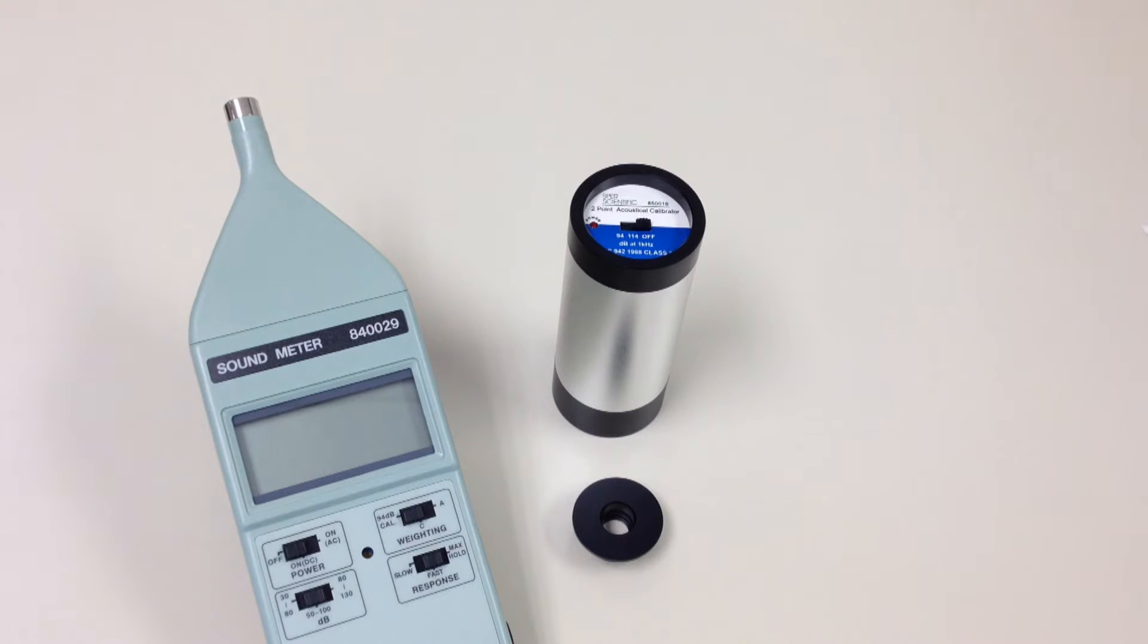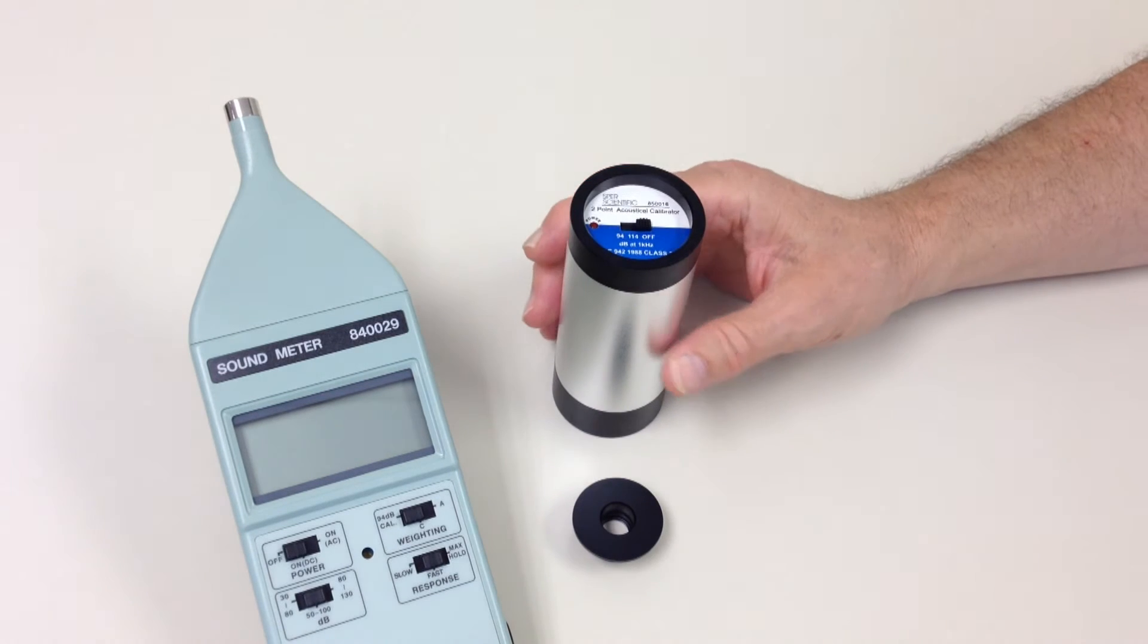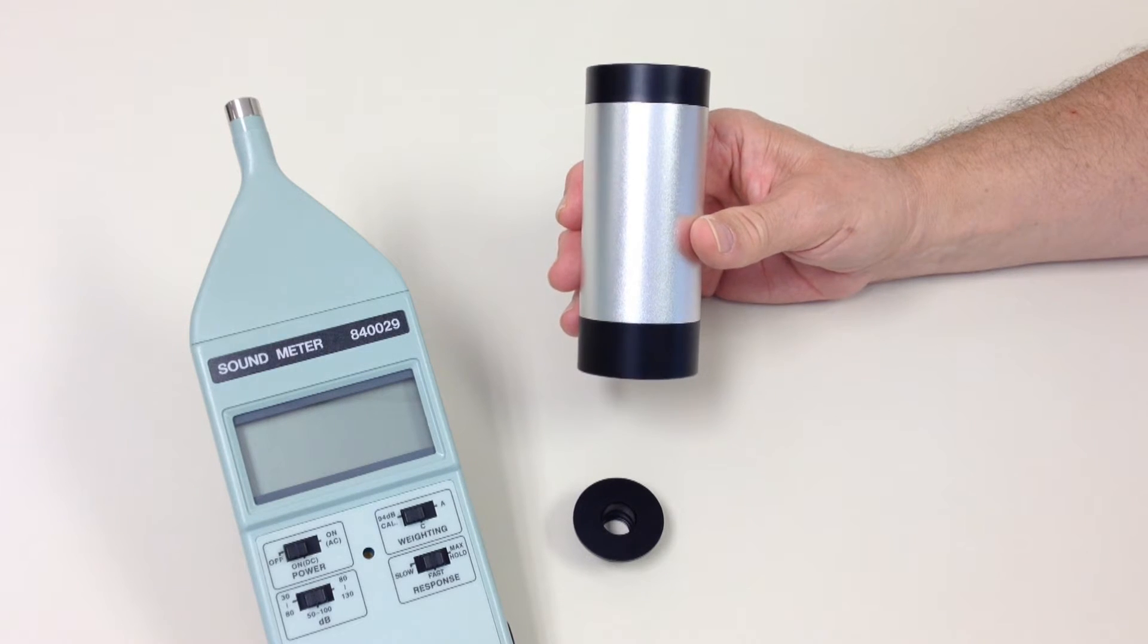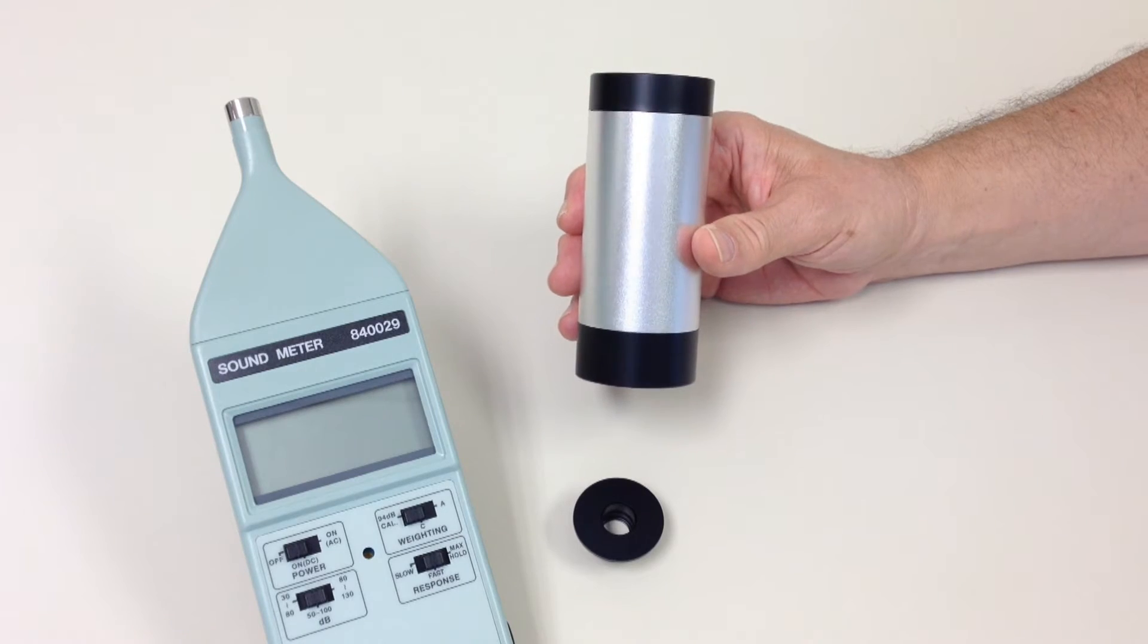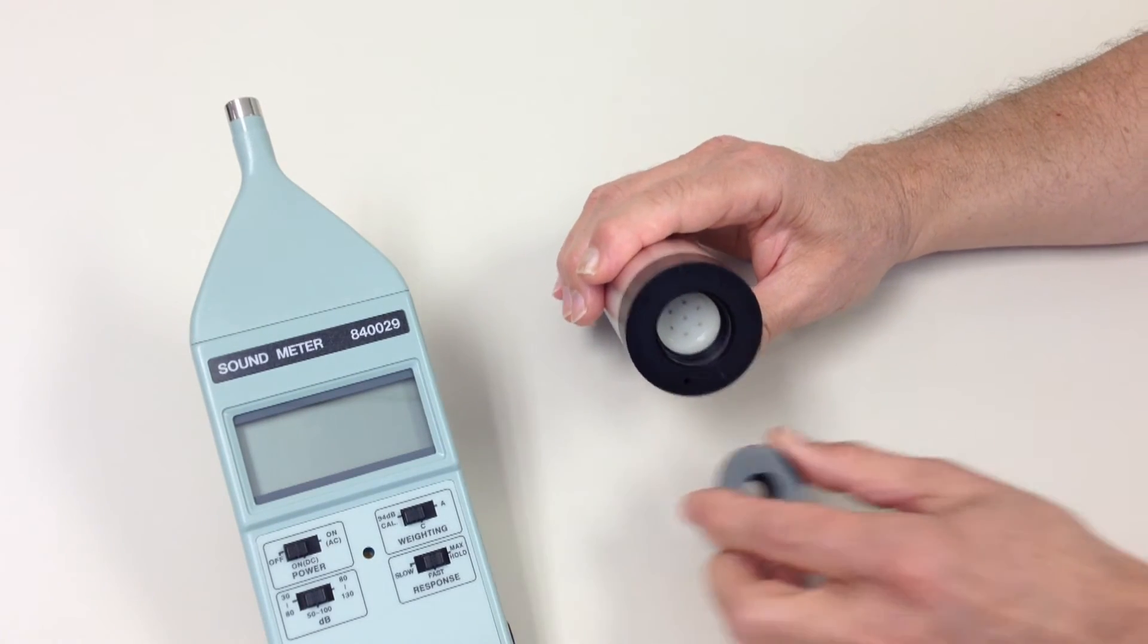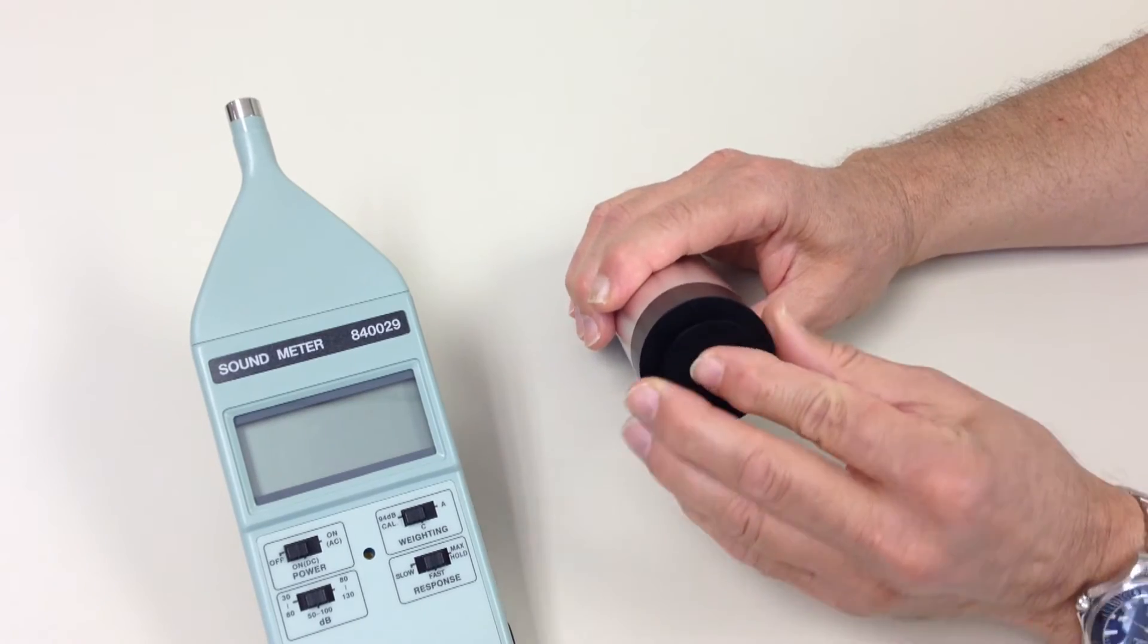In order to adjust the entire system, including the microphone, you need an acoustical calibrator, like Spear Scientific's two-point acoustical calibrator 850016. This model works with any digital sound meter with a one-inch or one-half-inch microphone.